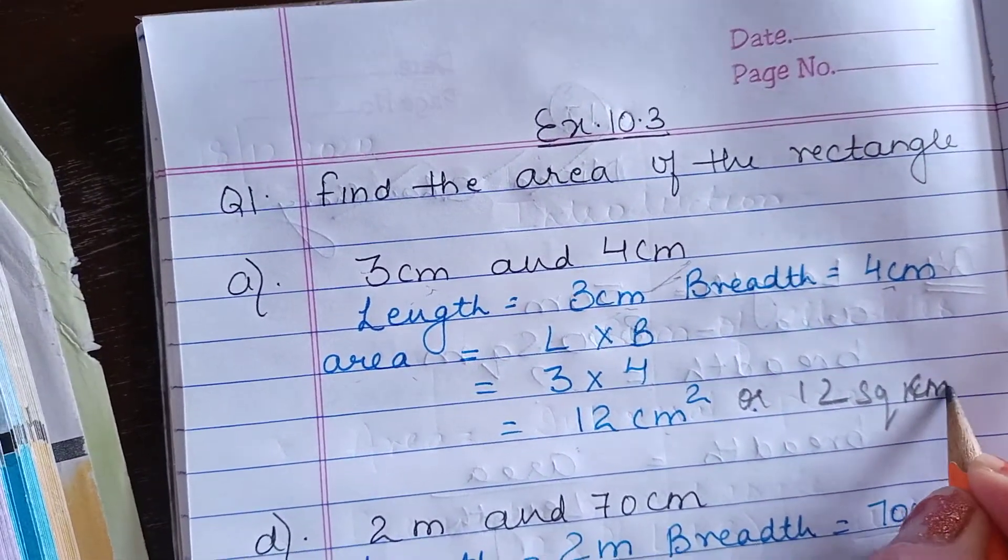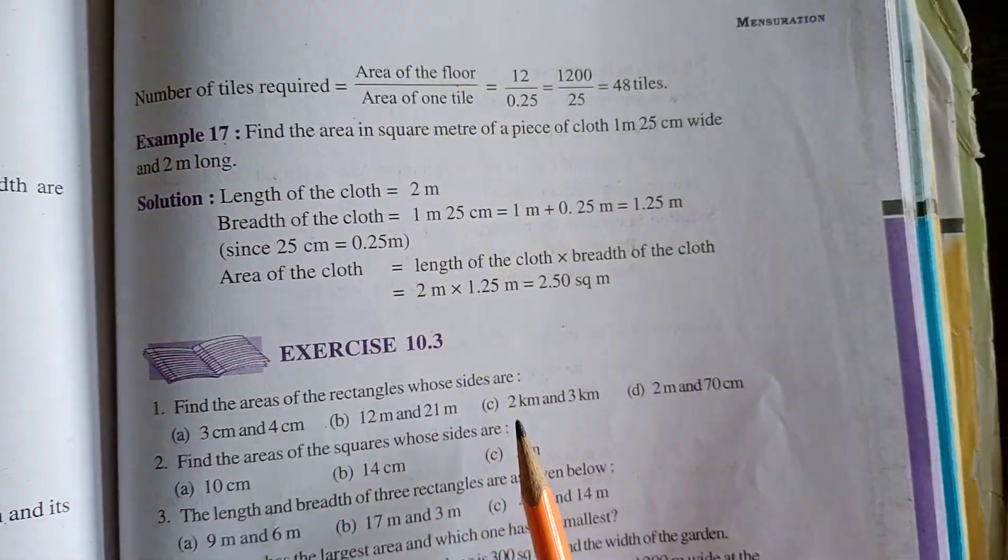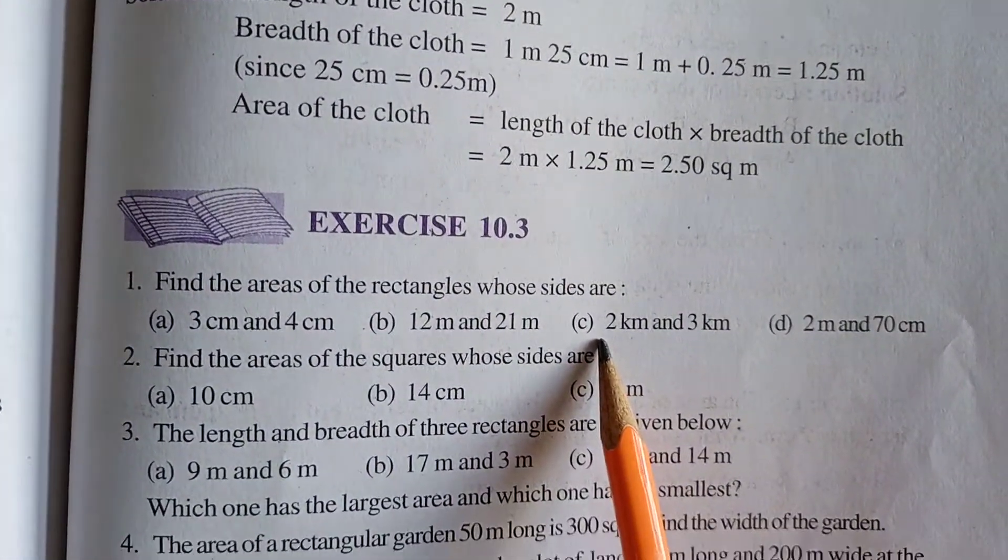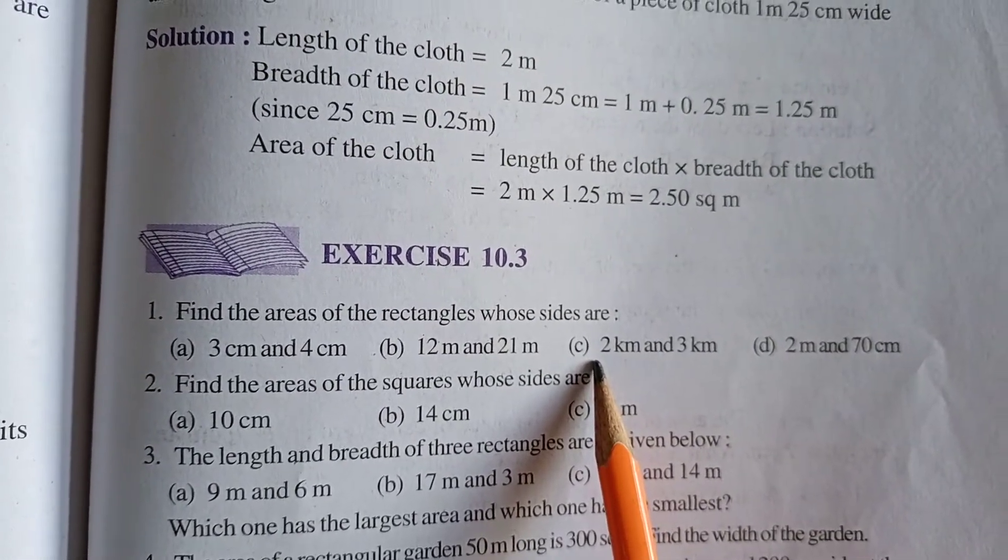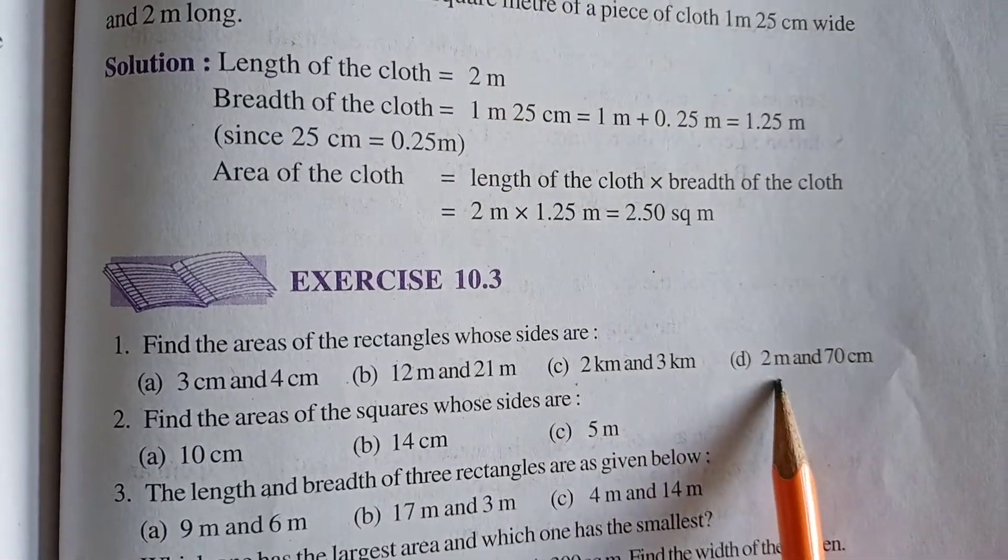12 cm² or we can write it as 12 square cm. In this form also we can mention. Now similarly your B and C part both are same. In this method only students you will do these two parts. Here I am explaining D part now.